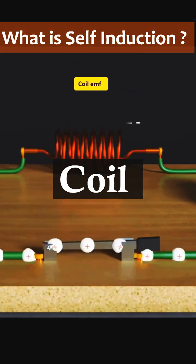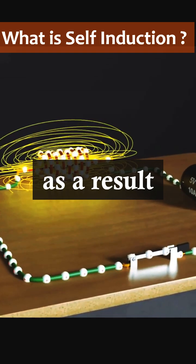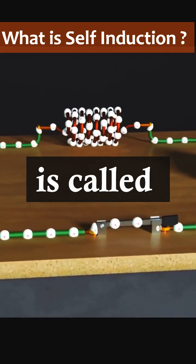Such a phenomenon in which a coil produces a magnetic field which links with its own turns, and as a result an induced EMF is generated across it, is called self-induction.